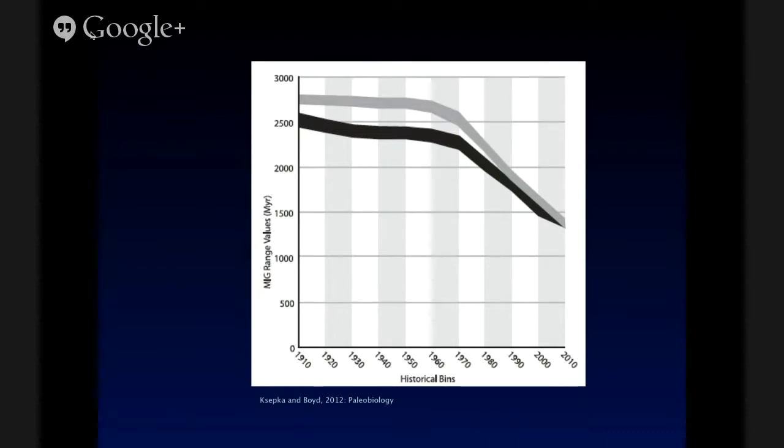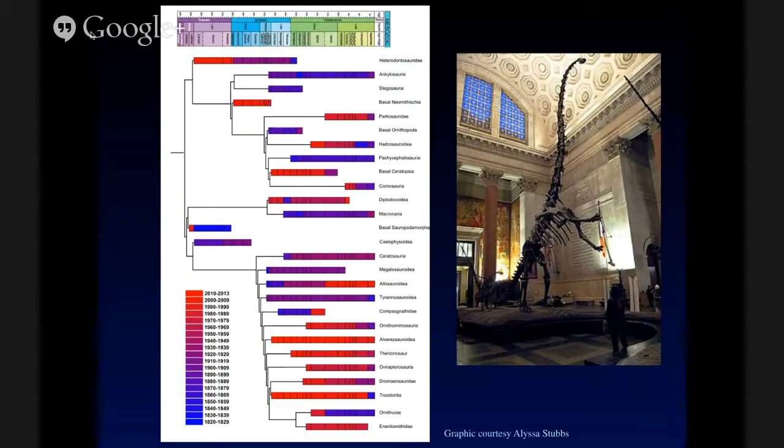And this method can also be extended to apply to groups that don't have living representatives. So here's an example where we let new discoveries extend the record either forward in time or backward in time for dinosaurs. And this is some work that my student, Alyssa Stubbs, has been doing with Clint and myself. And the colors indicate the historical time the discoveries were made. So ranging extending discoveries from the early part of the 1800s are in blue. And as we go towards warmer colors, those are discoveries taking place closer to today. And so the hot red part of the bottom of the cladogram is representing a lot of the new discoveries of feathered theropod dinosaurs that have taken place in localities such as China and Australia.